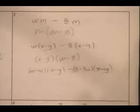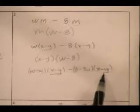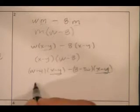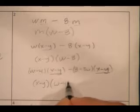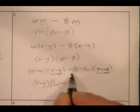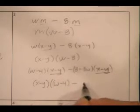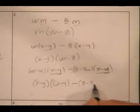Can I look at this term and this term and say, are there any common factors here? Isn't this x minus y the common factor? So I can take the x minus y out. What's left in this term is the w minus 4, minus what's left over here, 8 minus 3w.